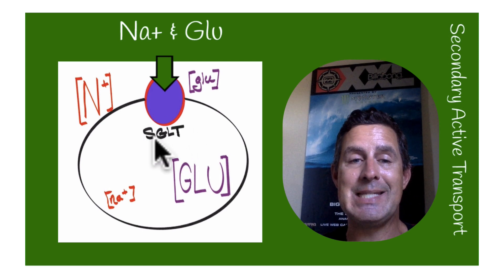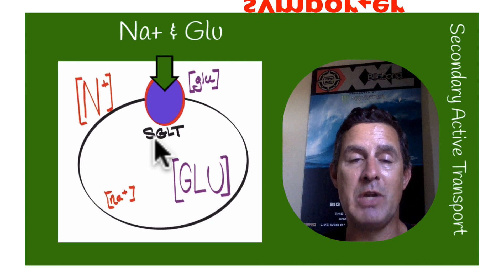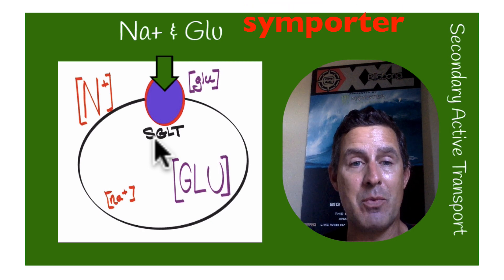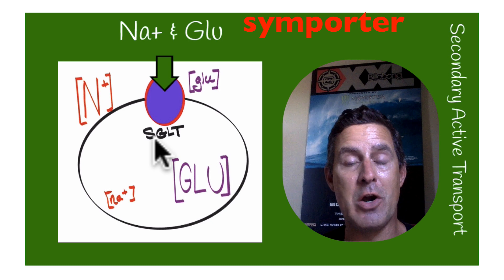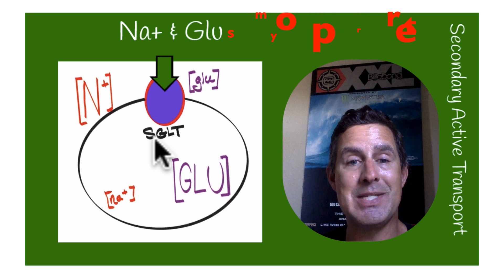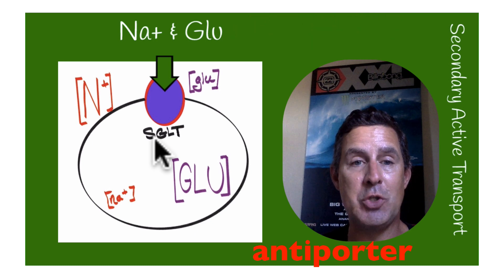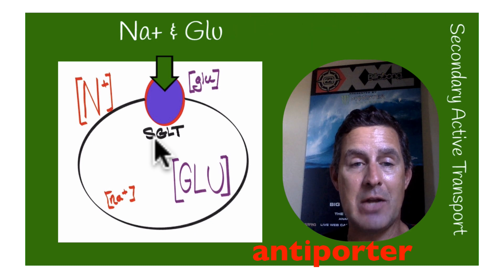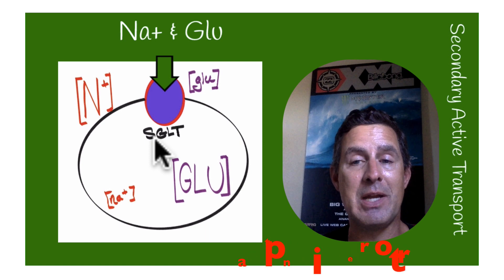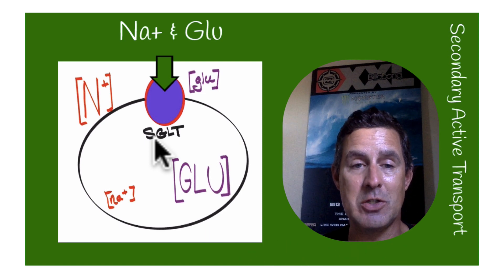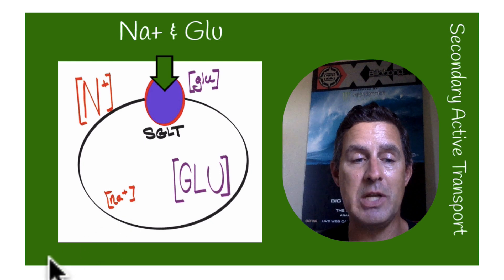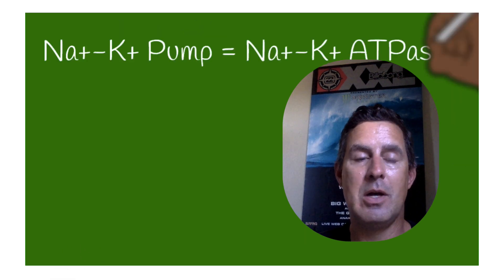This is what's known as a symporter because it's moving glucose along with sodium in the same direction. But there are things known as antiporters, which utilize kinetic energy but the entities are moving in opposite directions, and we'll take a look at those in subsequent videos.